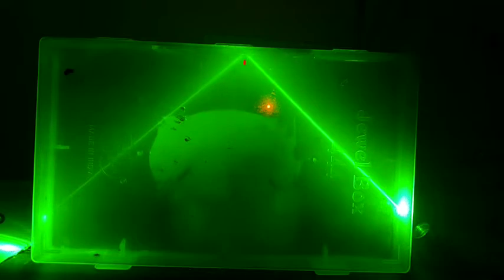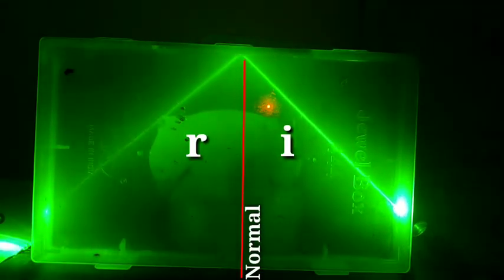So if we draw a normal between these two incident and reflected rays, we will get angle i is equal to angle r.